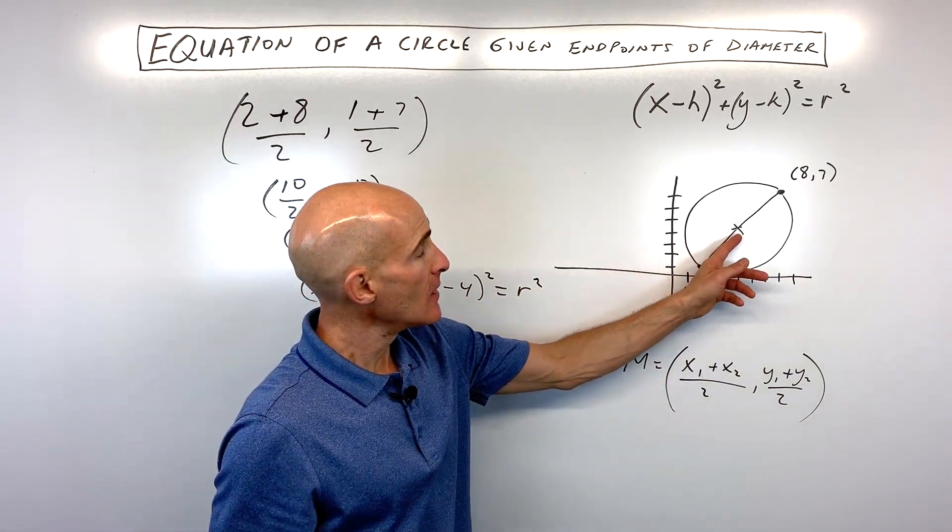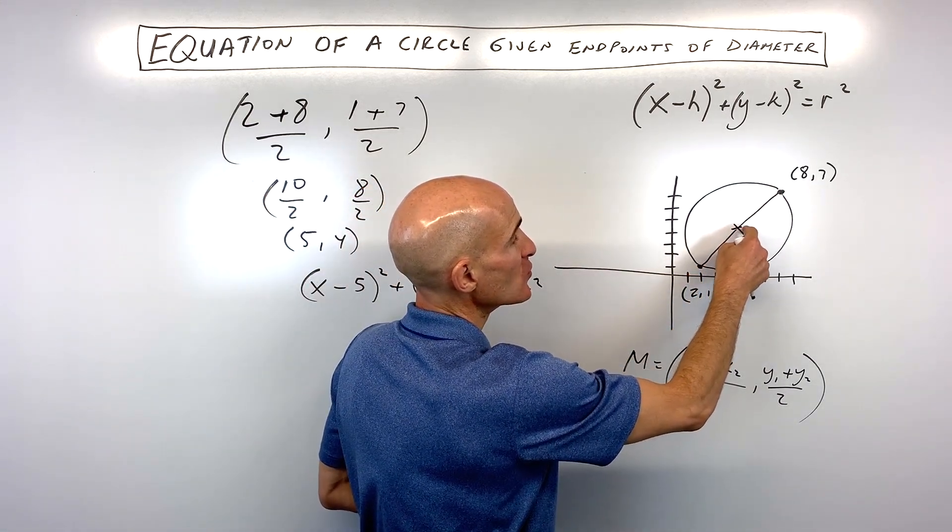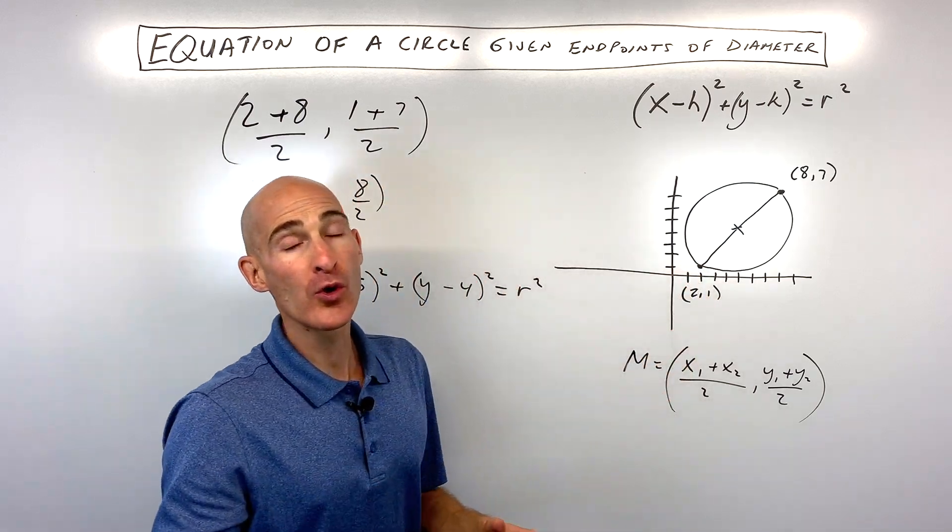Now how do we find the radius? Well, you can do this two different ways. One way is you can use the distance formula between the center and either this endpoint or this endpoint, or you can do what I like to do,